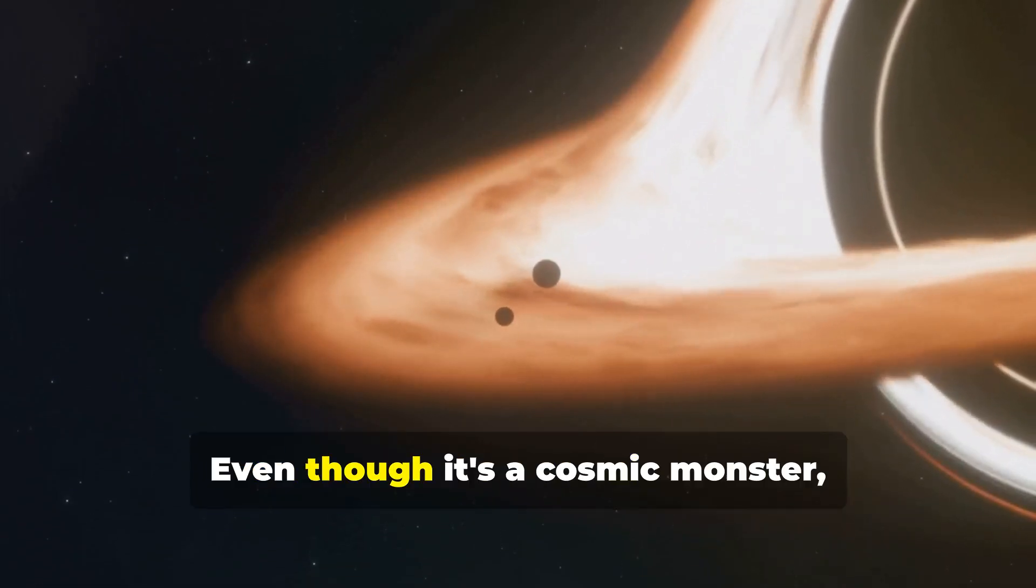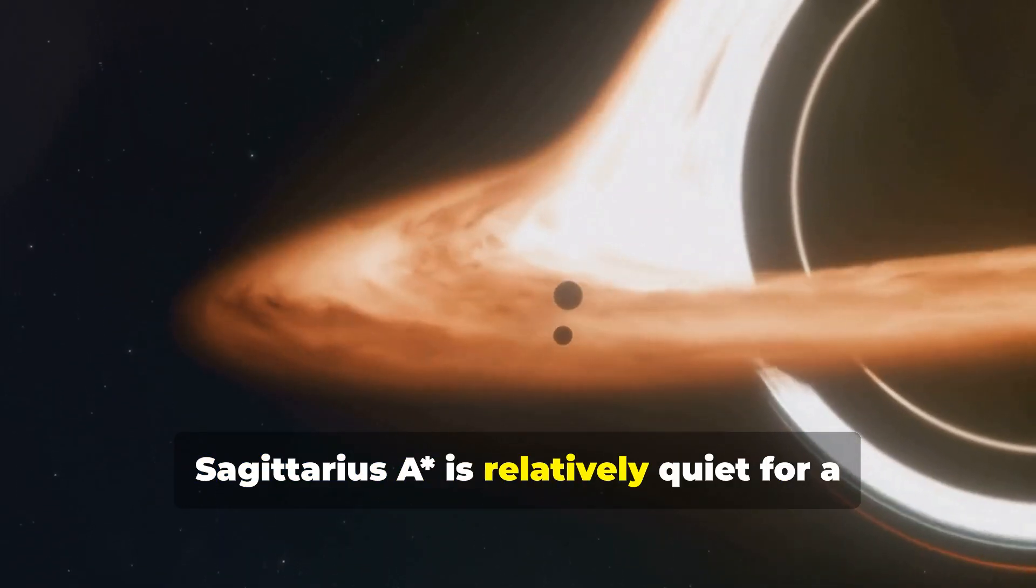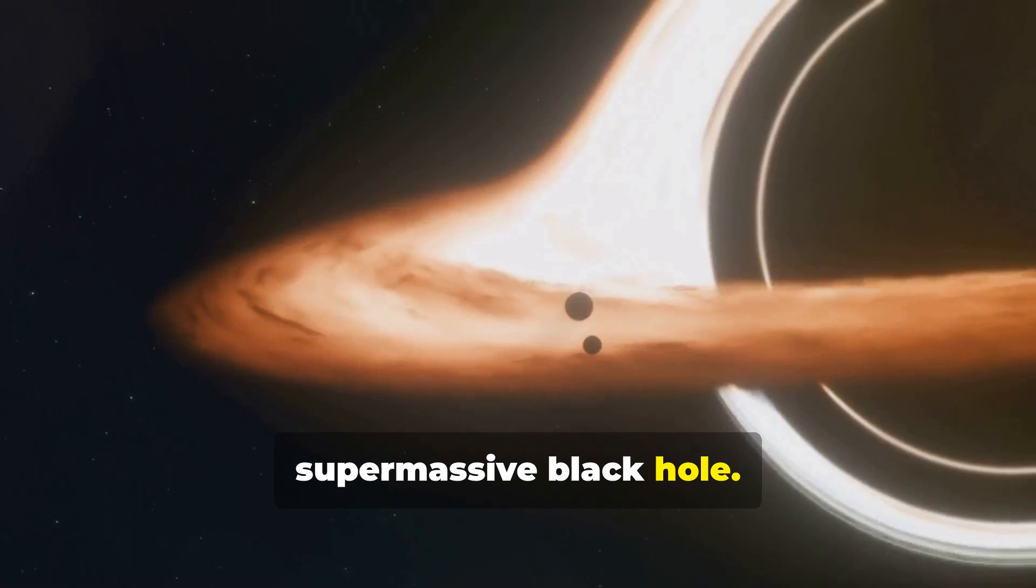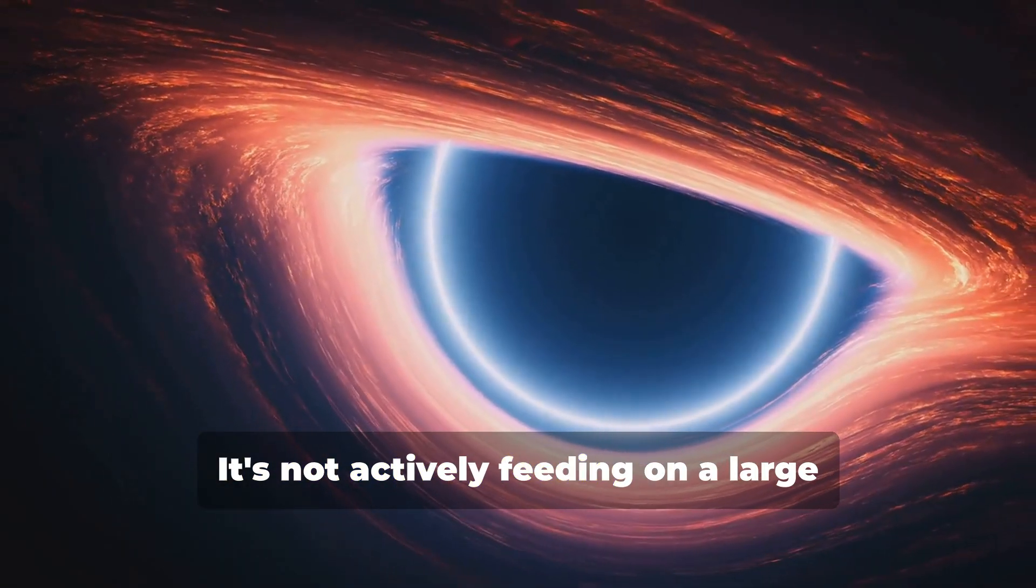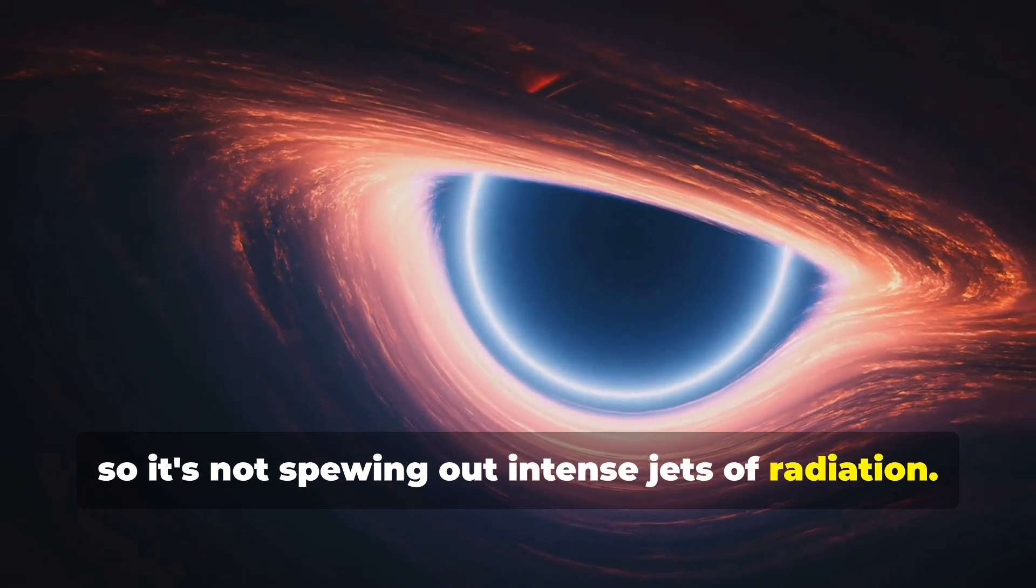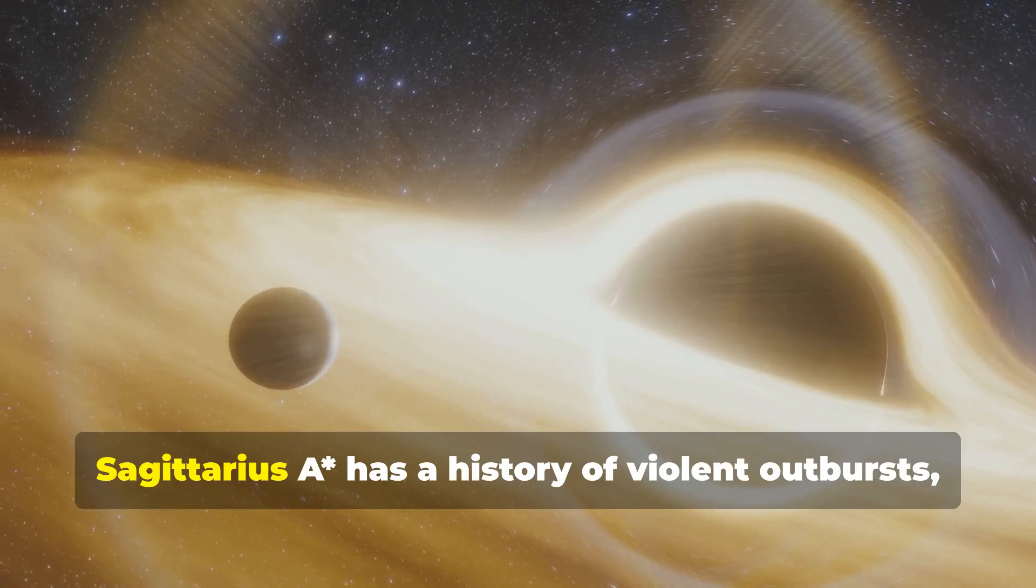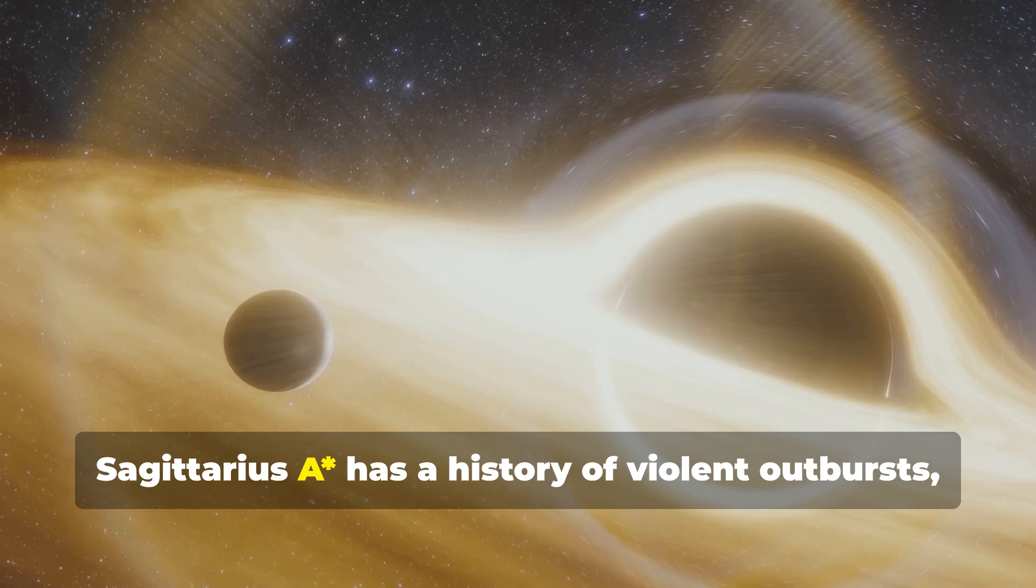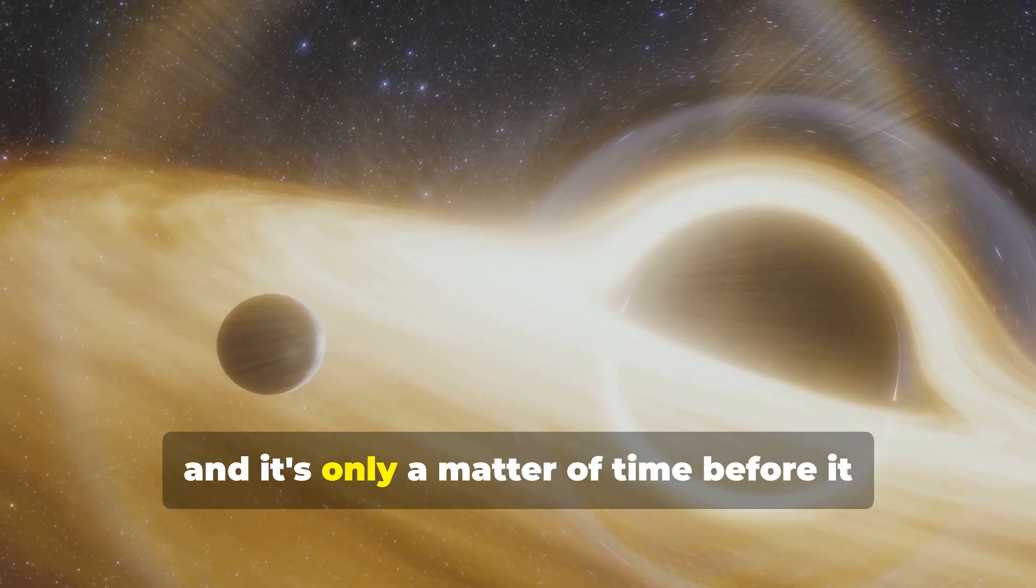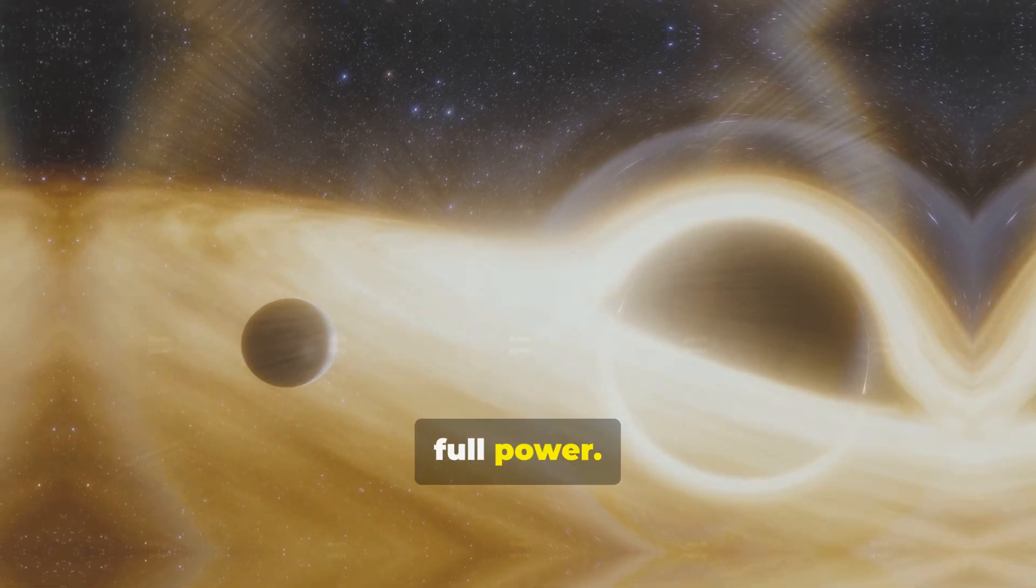Don't worry though. Even though it's a cosmic monster, Sagittarius A asterisk is relatively quiet for a supermassive black hole. It's not actively feeding on a large amount of matter, so it's not spewing out intense jets of radiation. However, don't let its current state fool you. Sagittarius A asterisk has a history of violent outbursts, and it's only a matter of time before it awakens from its slumber and unleashes its full power.